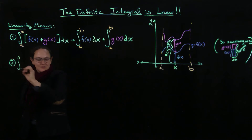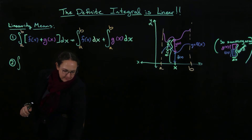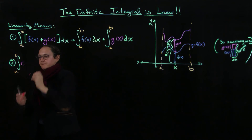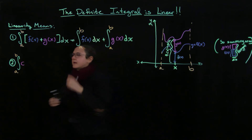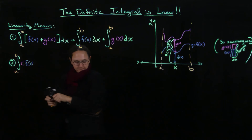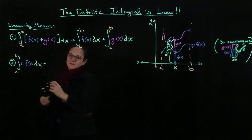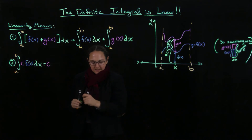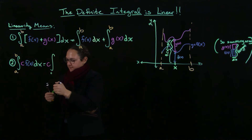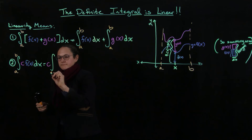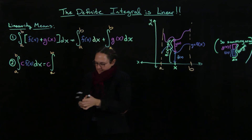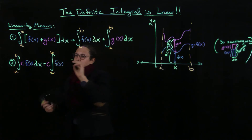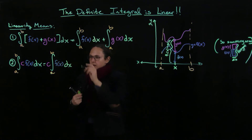Now we're going to look at the second property. We're still going from a to b, but now I'm going to pull out a constant c — c is any constant — that I'm multiplying my function f of x by. Just like we've been able to do with derivatives, I'm able to pull out the c and get c times the integral from a to b of f of x dx. We can do it because it's a constant.